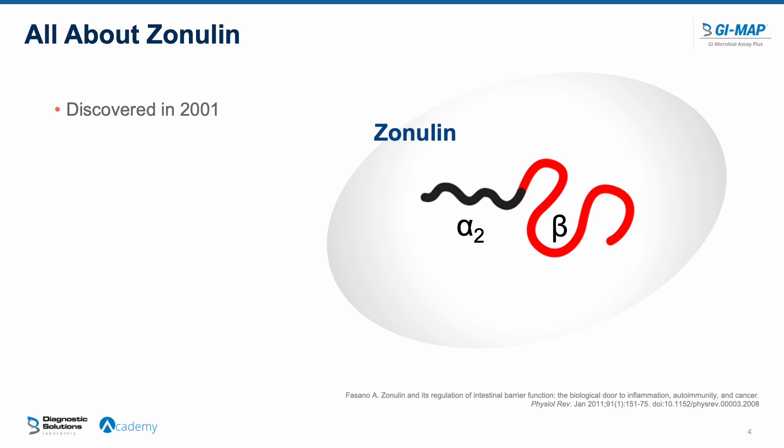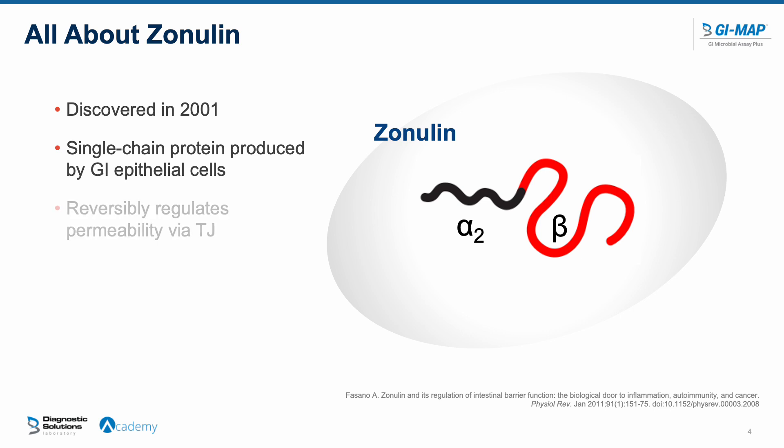Zonulin was discovered in 2001, so it's a fairly recently discovered protein. It is a single-chain protein produced in our body by our own GI epithelial cells — the cells lining our gastrointestinal tract. It's also known as pre-haptoglobin 2, meaning it's a precursor to haptoglobin 2, and it reversibly regulates permeability via the tight junctions.